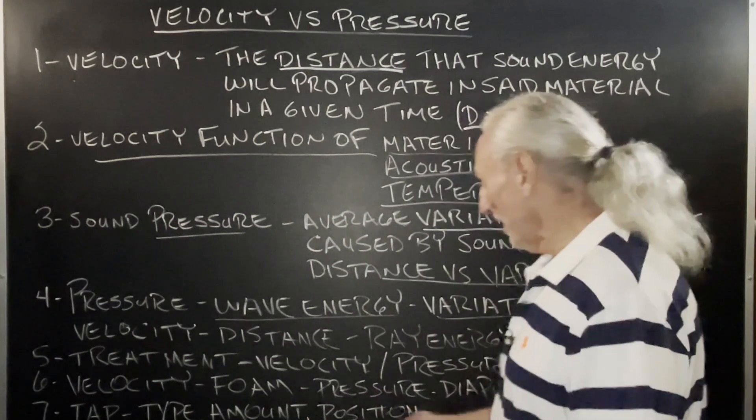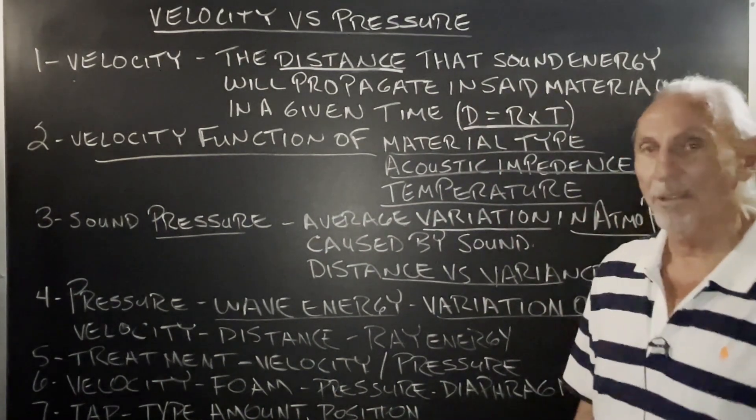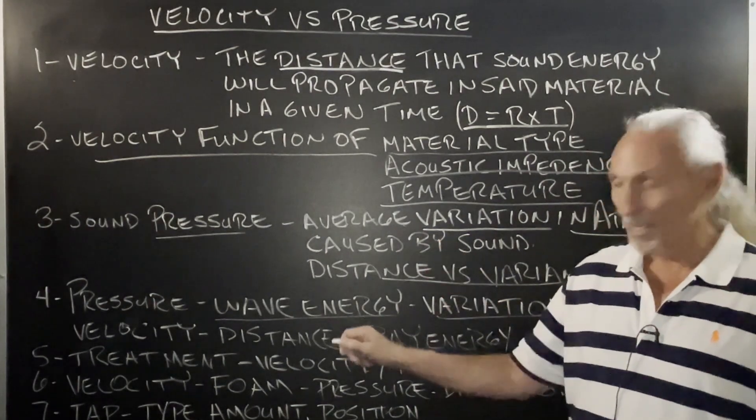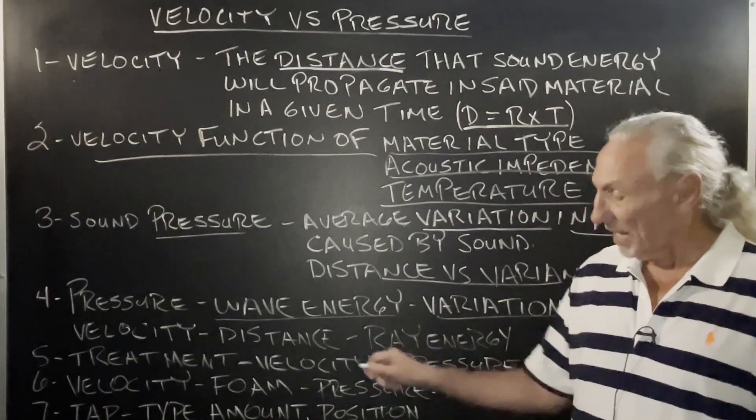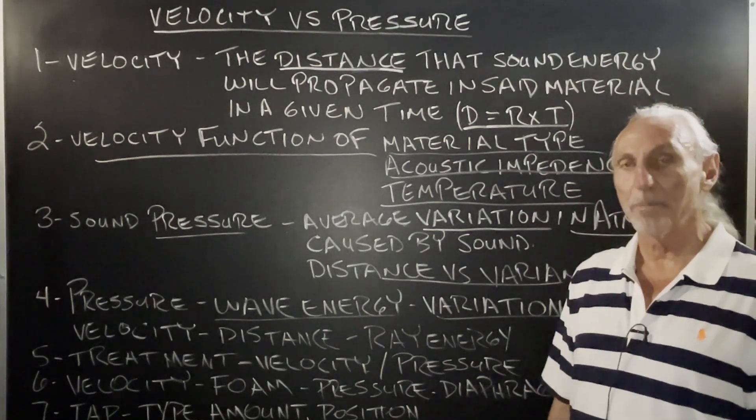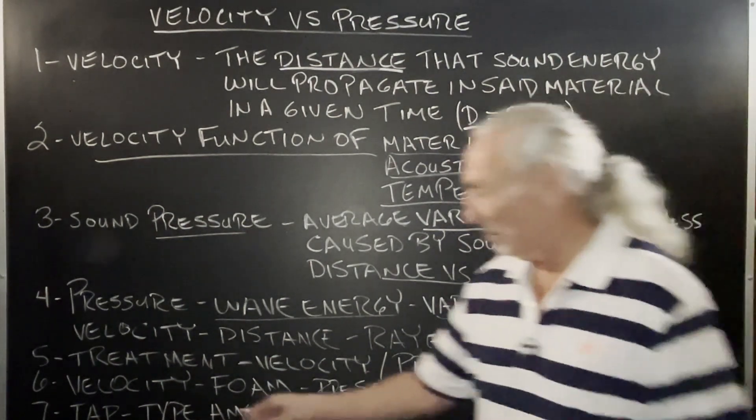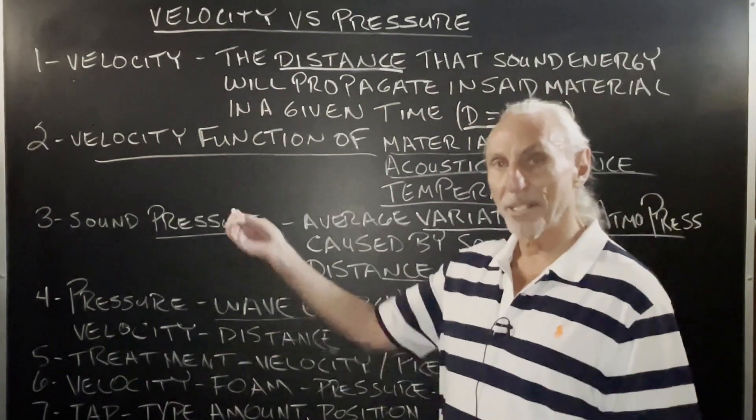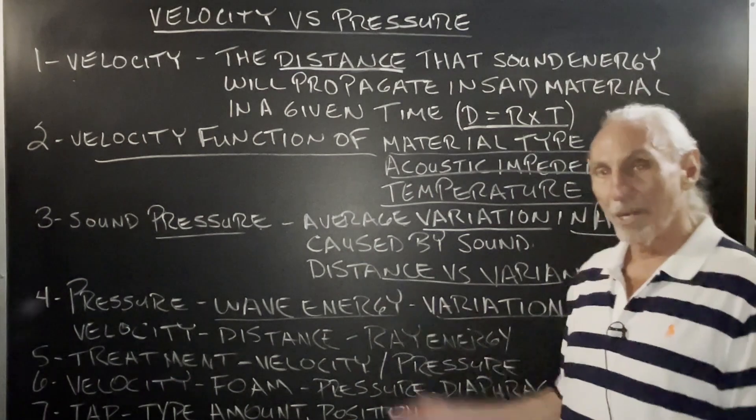People got to start understanding this: type, amount, position. It's an acronym we use called TAP. You got to select the right type of treatment, the right amount of treatment, we call that critical mass, and place it in the proper position. People get really confused here with type. And they mix up pressure and velocity, wave and ray energy.